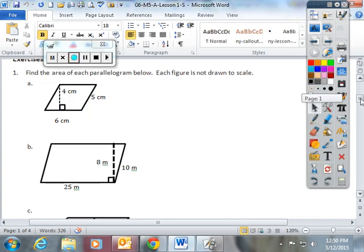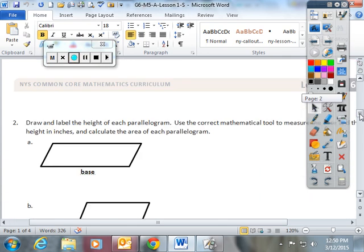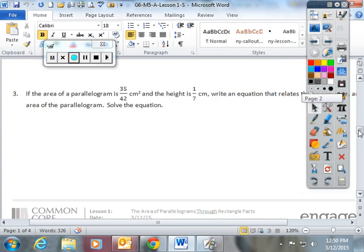So then, there is another question that was really great. And this was actually the most missed question on the algebra exam, so I'm glad they're bringing this up. The area of the parallelogram is 35 and 42nds cm squared. You're not squaring the fraction. This is just the squaring of the units, meaning that's how many square centimeters would fit in there.